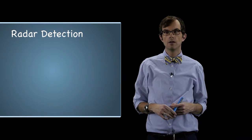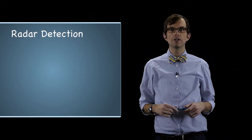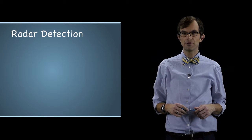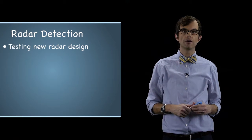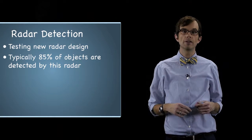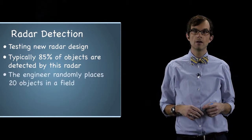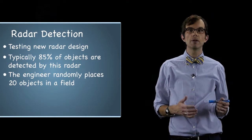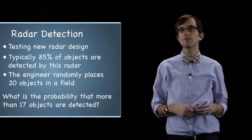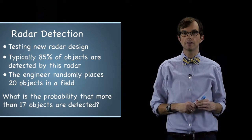Let's do a few examples where we're examining phenomena best described with a binomially distributed random variable. A radar engineer with the Advanced Radar Research Center at the University of Oklahoma is testing a new radar design. Typically eighty-five percent of the objects are detected by this radar. The engineer randomly places twenty objects in a field — what's the probability that more than seventeen of those objects are detected?